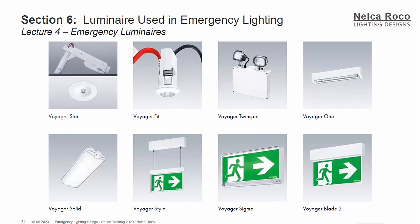These are the types of emergency luminaires. Sometimes they are a little decorative, sometimes just a very simple one. This circular one has a little LED bulb and can be used in the corridor. Another is similar but a little bulky and looks like a surface-mounted. This one has two floodlights with a battery inside. This is a normal fitting which can also be used in emergency lighting, and this one is a bulkhead, which can be used as normal lighting as well as emergency.